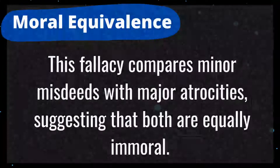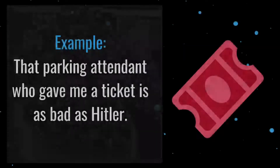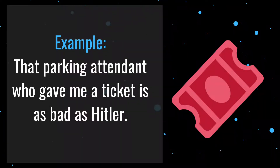Number 12 is moral equivalence. This fallacy compares minor misdeeds with major atrocities, suggesting that both are equally immoral. For example: that parking attendant who gave me a ticket is as bad as Hitler. In this example, the author is comparing the relatively harmless actions of a person doing their job with the horrific actions of Hitler. This comparison is just unfair and inaccurate.